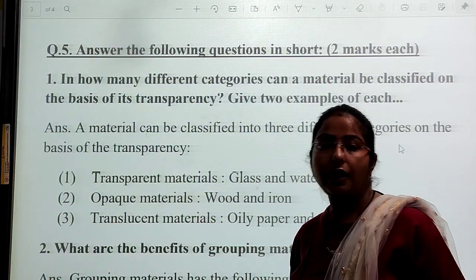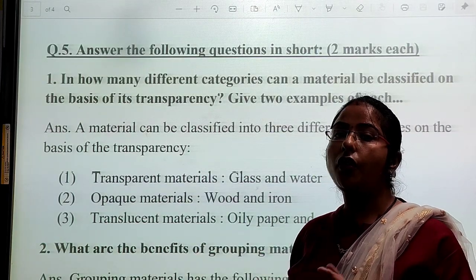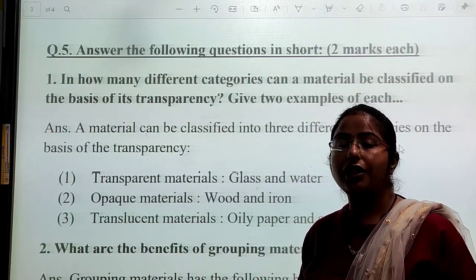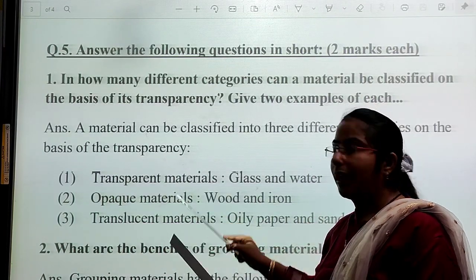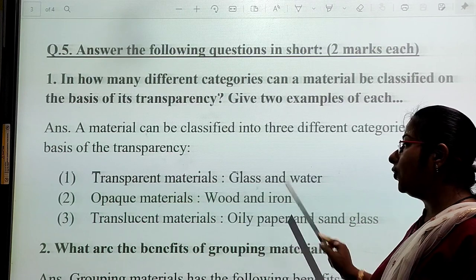Opaque materials are the materials from which you are not able to see the other side of the object. We call it opaque materials. Examples: wood and iron.